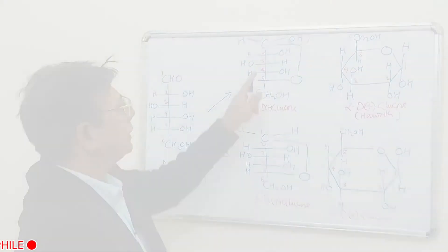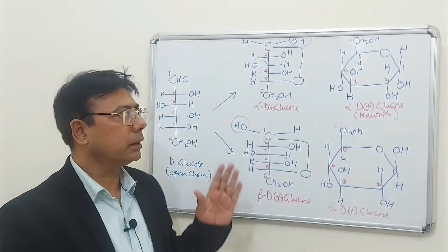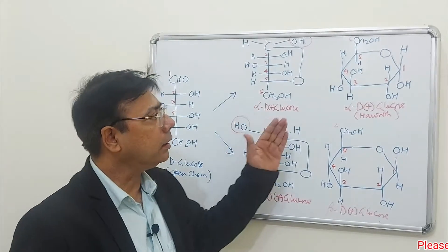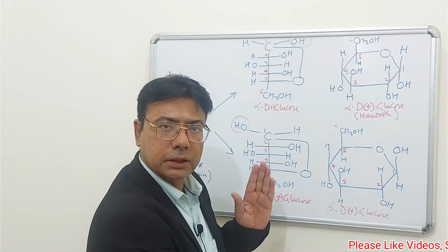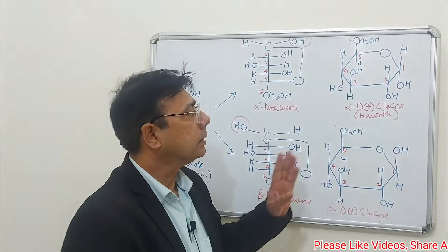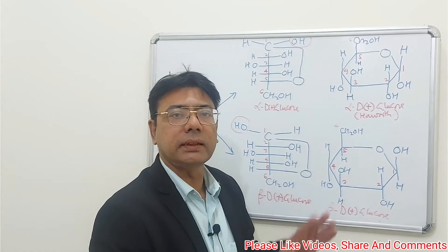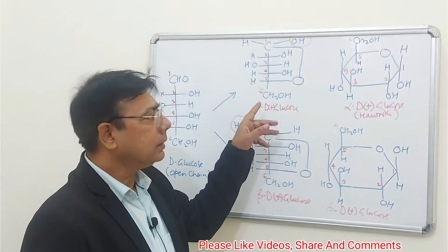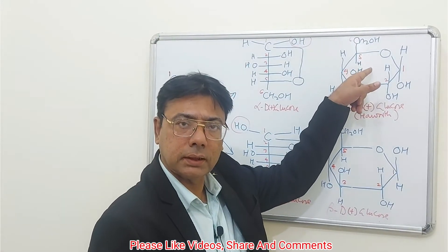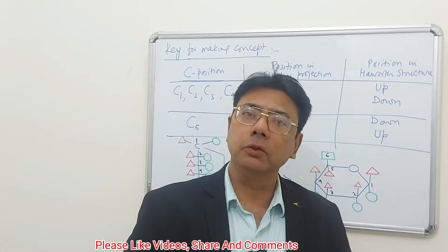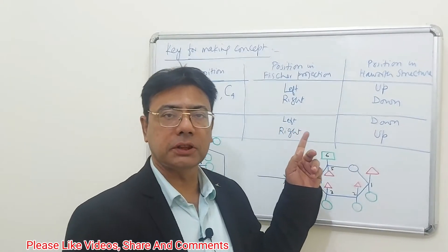Comparing the two Haworth structures, for carbons 1, 2, 3, and 4, the groups which are on the left in the Fischer structure are on top in the Haworth structure, and vice versa — groups on the right in Fischer are down in Haworth. However, the situation is opposite for carbon 5: groups on the left in Fischer are on the bottom in Haworth, and vice versa.